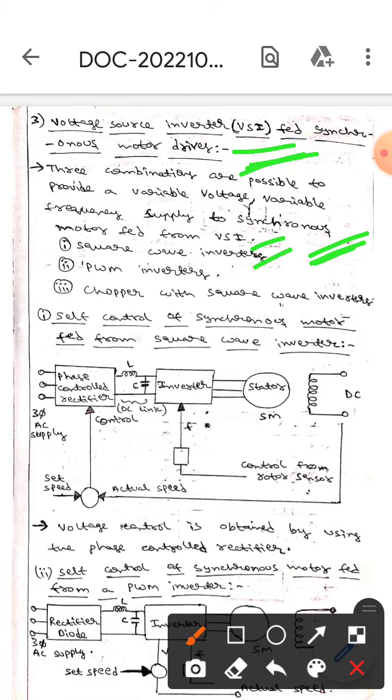They are: the first one is square wave inverter, the second one is PWM inverters, and the third one is chopper with square wave inverter. Let's first discuss the self-control of synchronous motor fed from square wave inverter.